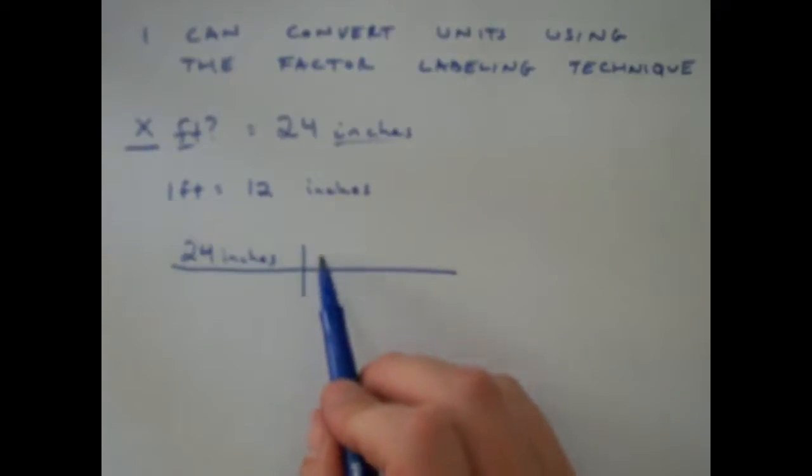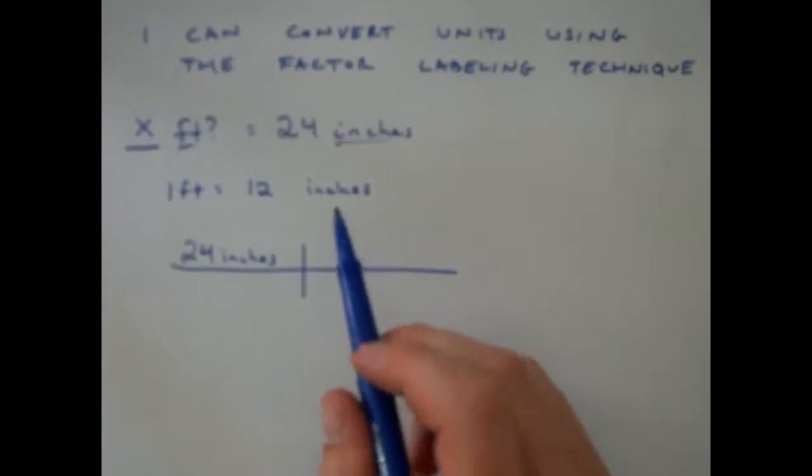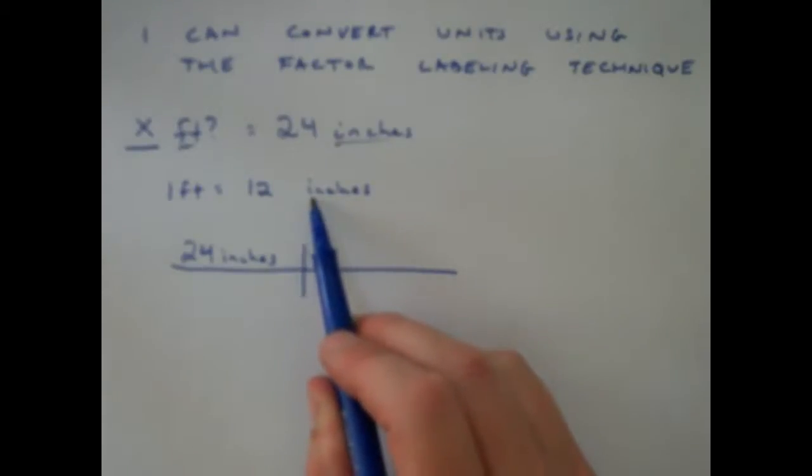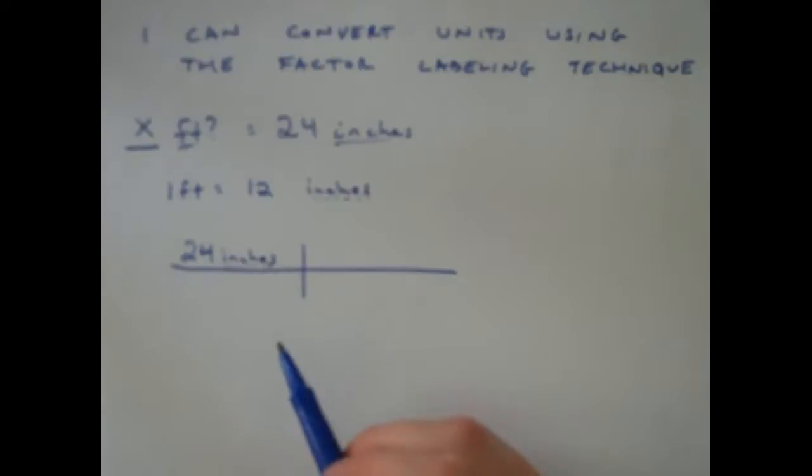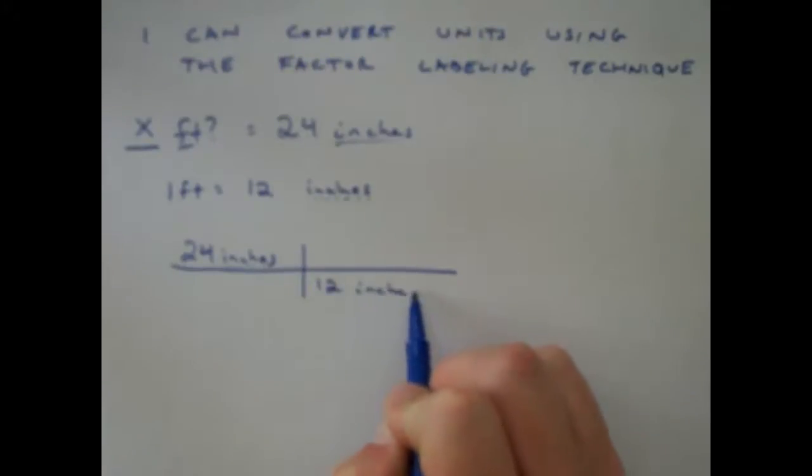I can take this conversion and I'm going to put it on top and on bottom of this fence. What I want to do is make sure that my inches, this value or unit I have here, is going to be on the opposite side. So I'm going to put my 12 inches just like this, and I know that for every 12 inches I have one foot.